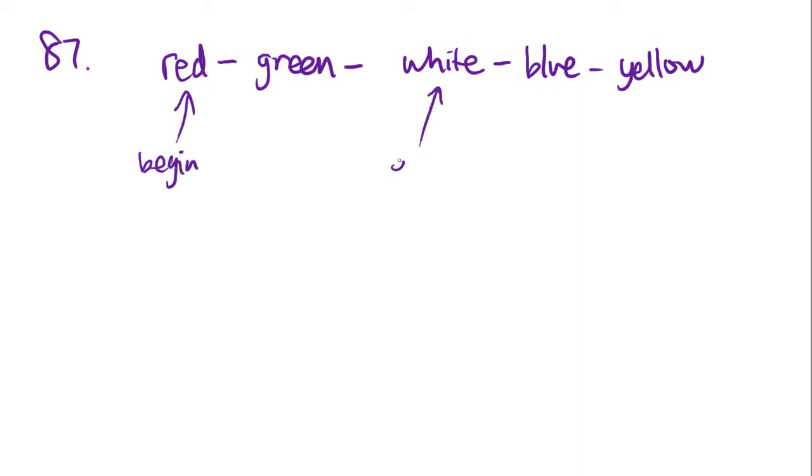Number 87 says, a necklace is made by stringing N individual beads together in the repeating pattern, red, and then green, white, blue, yellow. Okay, so that's the pattern. If a necklace design begins with a red bead, so it begins here, and ends with a white bead, ends here, what could N equal?